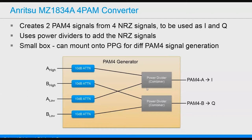We are using each of these four PPGs single-ended, sending their outputs to the MZ1834A 4-PAM converter box. This converter box takes in four signals and combines them to output PAM-4 electrical signals sent to the IQ transmitter. The box includes attenuators to keep reflections from coming back, and power divider combiners to add up signals. We label them A-high, B-high, A-low, and B-low — the low channels being nominally half the size of the high channels. Summing A-high and A-low outputs one PAM-4 signal; summing B-high and B-low gives the PAM-4B quadrature signal.